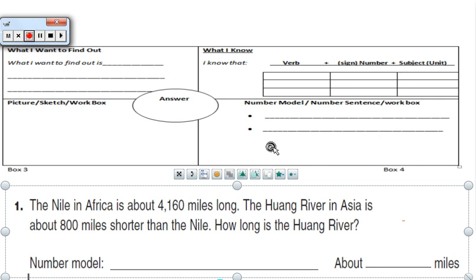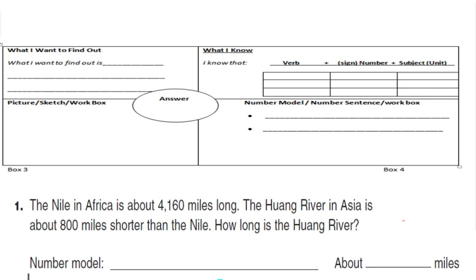Our first step was to find the question by circling it. The easiest way to find the question is to find a question mark. We circle from the question mark all the way to the period. There's our question. Now we have to get that information and put it in box number one. So, how long is the Wong River? That's what we want to find out.